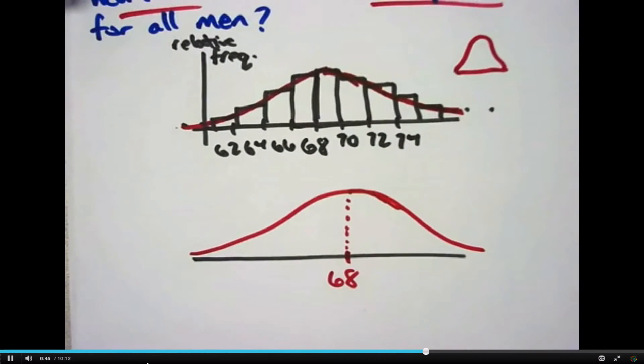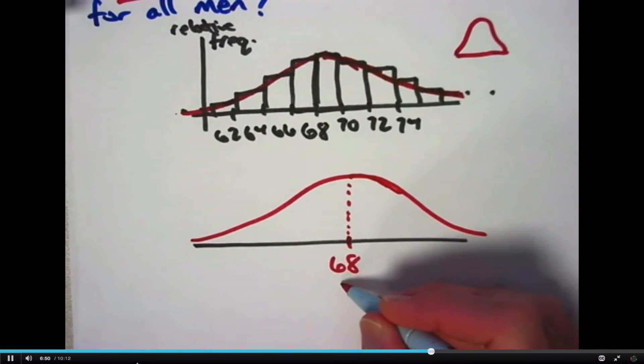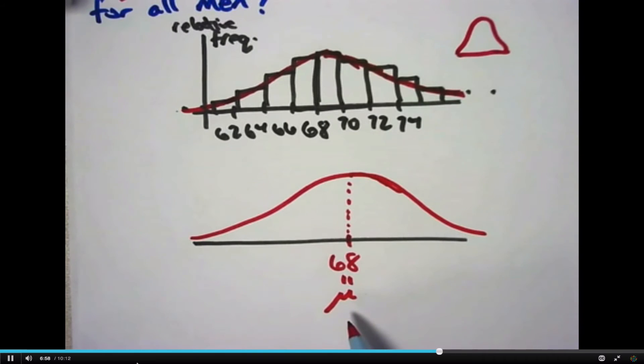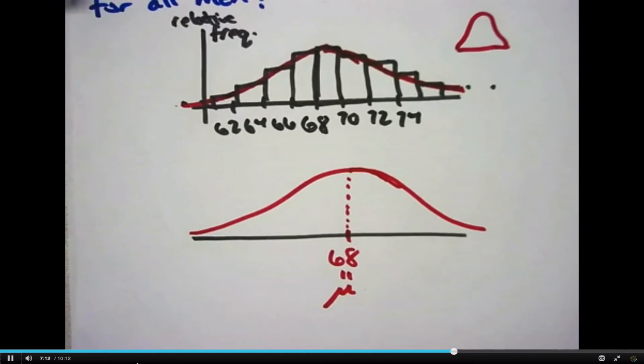There's different symbols that are used for the mean. Sometimes x-bar is used for the mean, and sometimes the Greek letter mu, which looks like this, sort of a weird combination of the u and an m. That's the Greek letter mu. That's going to represent the mean of a population, and since we're imagining that this distribution is modeling a population, it is traditional to call it mu here as well.